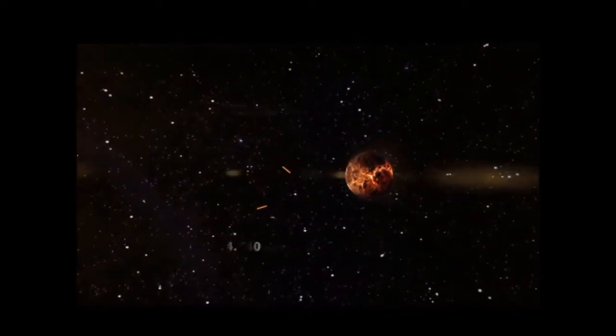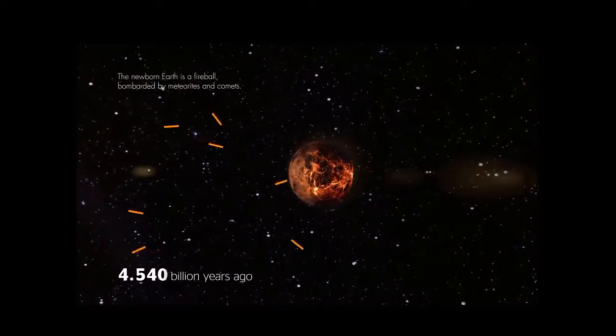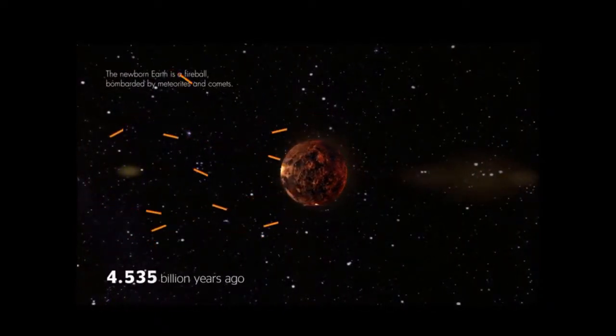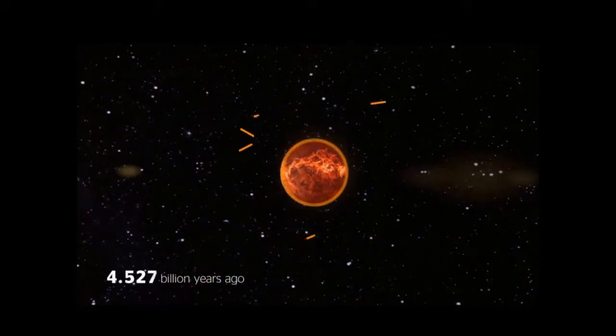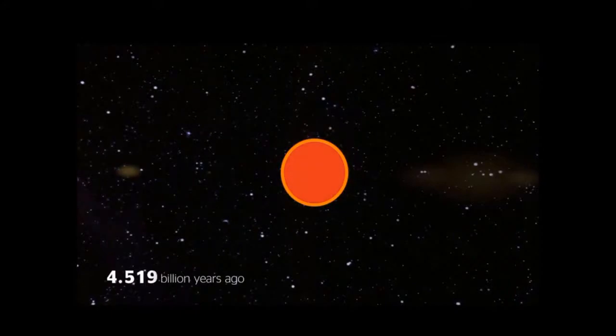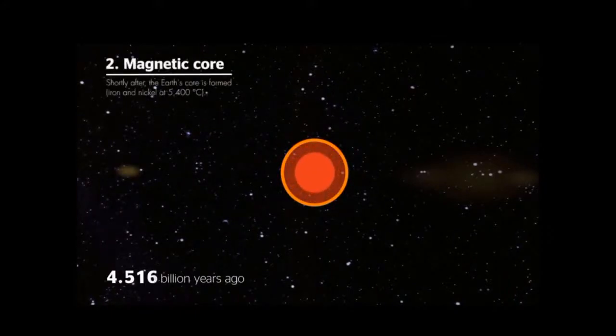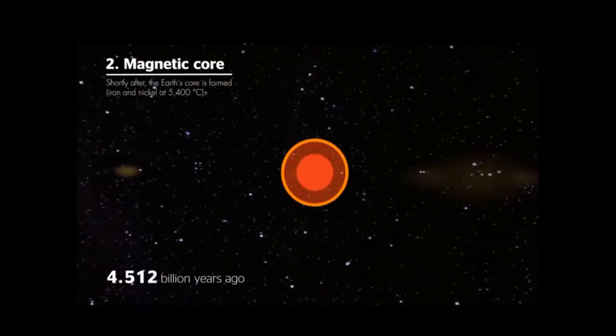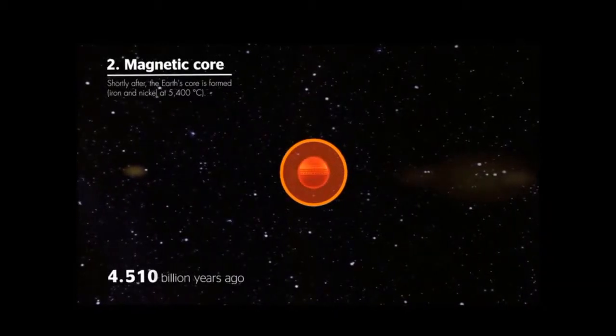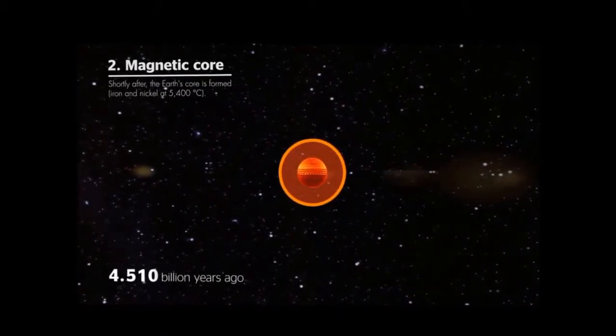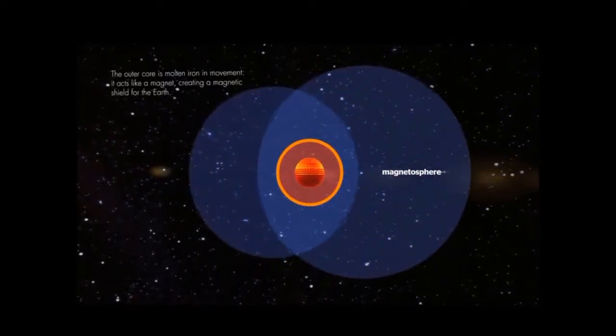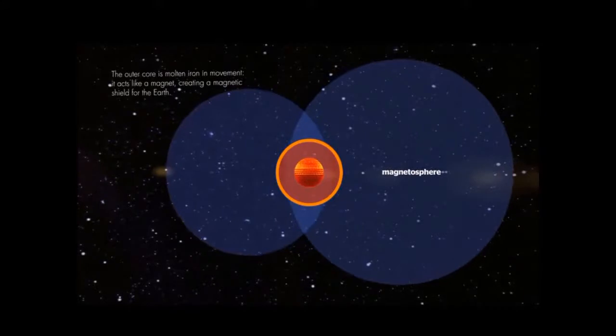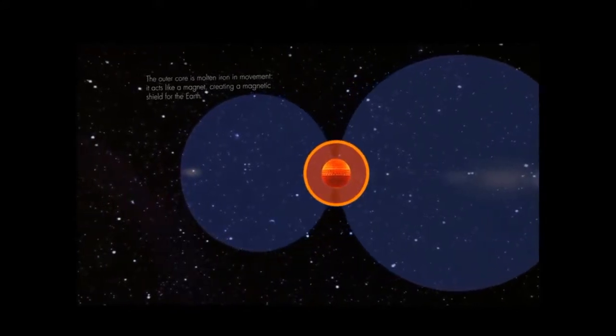The second landmark point is the magnetic core of the Earth. Shortly after Earth's core formed, the core which is mainly made up of iron and nickel, started behaving like a giant magnetic bar. Eventually, Earth develops a magnetic field, as you can see in the clip.